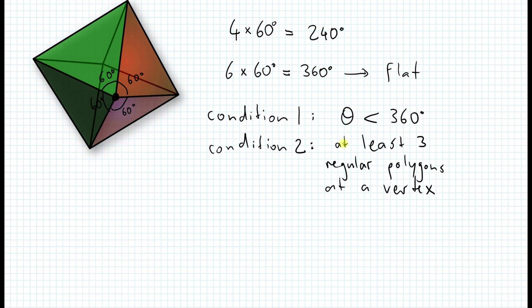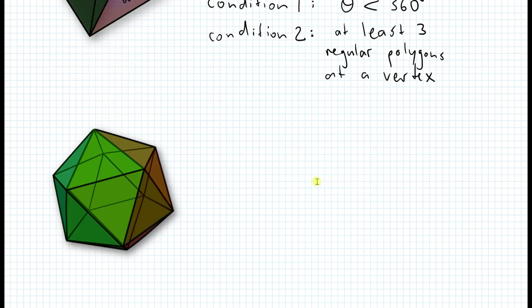So if you look at these conditions, there are only five figures that you can make. Let me give you another example — the icosahedron. If you look at a vertex, you have 1, 2, 3, 4, and 5 — five equilateral triangles at a vertex. So 5 times 60 equals 300 degrees. The first condition is met, and the second condition — at least three regular polygons at a vertex — is also met.